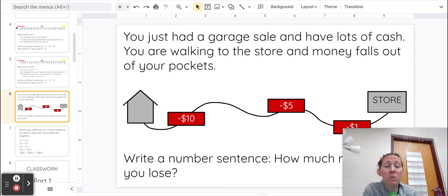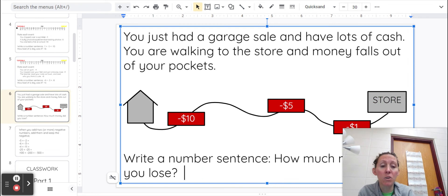And you get to the store and you realize you've lost so much money. So our number sentence would be negative 10 plus negative 5 plus negative 1. So you lost $10, and then you lost $5, and then you lost $1. So all together, you lost $16.